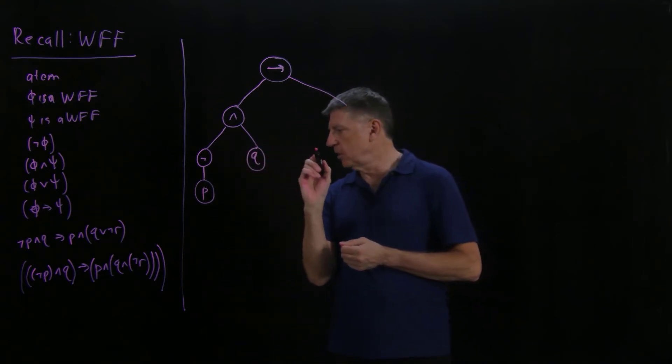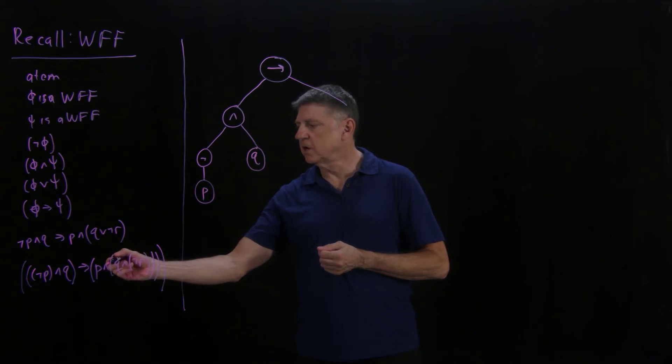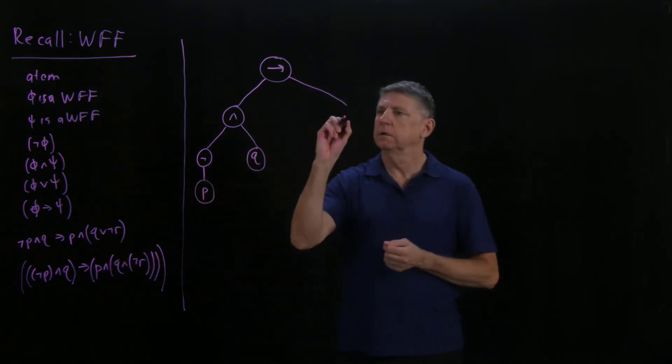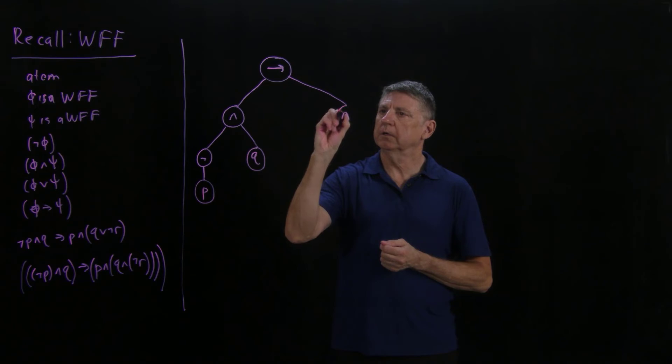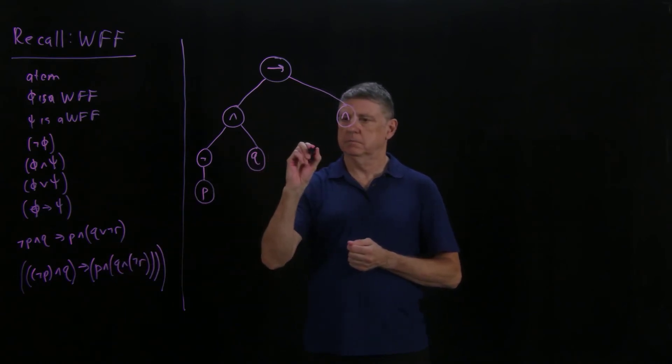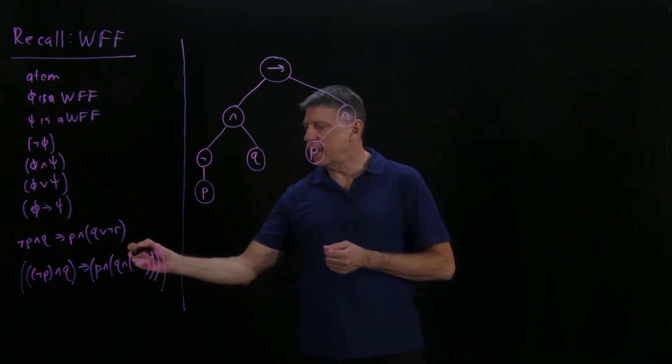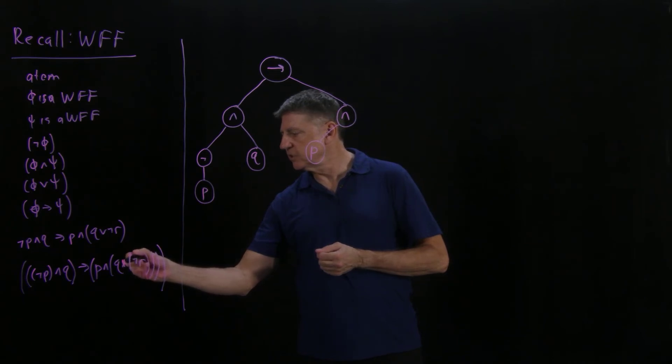If we now go to the consequent, the consequent has the structure of conjunction, so we can put conjunction there. The left conjunct is the atom p. The right conjunct has the structure of, oh, that's supposed to be disjunction here, has the structure of disjunction.